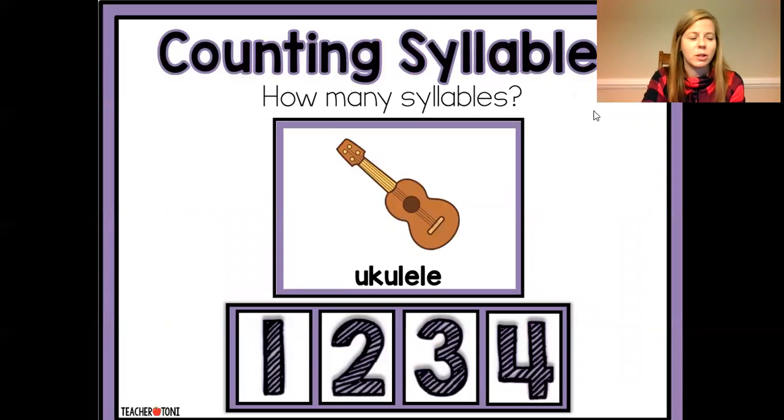How many syllables in ukulele? You ready to clap? You, ku, le, le. How many times do we clap? Four. Four syllables.